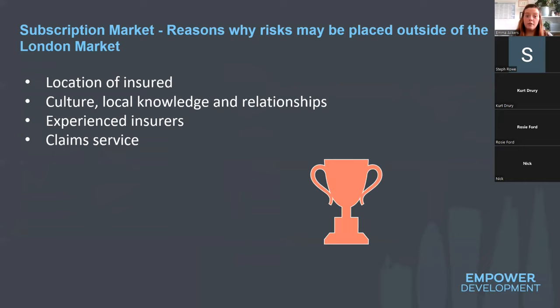Risks can also be placed outside of the London market in what we call the company market. This could be done if the insured or the risk is outside the area due to location, culture, knowledge, or relationships. It could be that the insurer specializes in a niche field of insurance or provides a really good claims service — there are a number of reasons why we would go outside the London market.